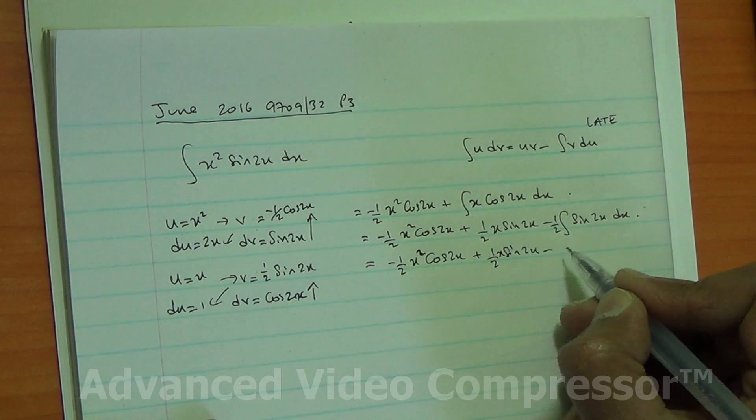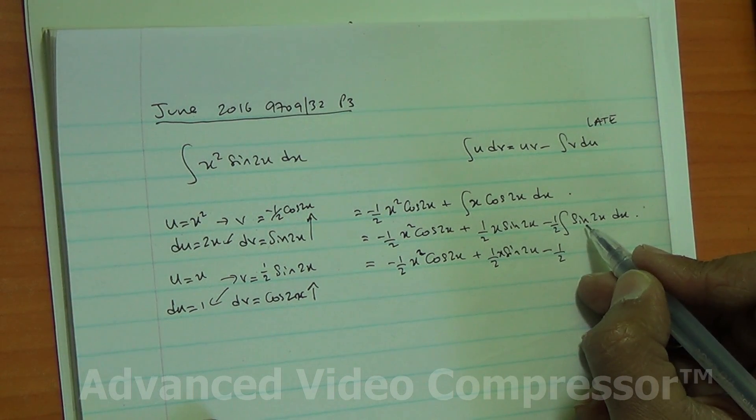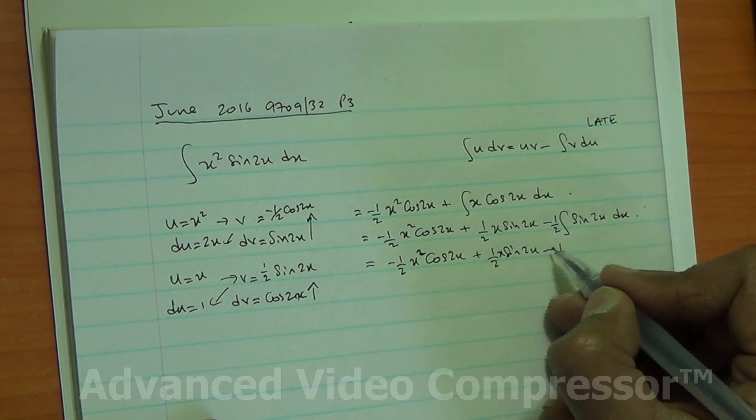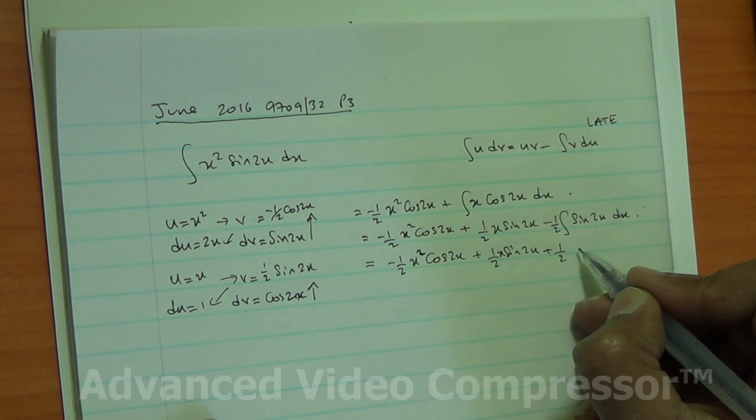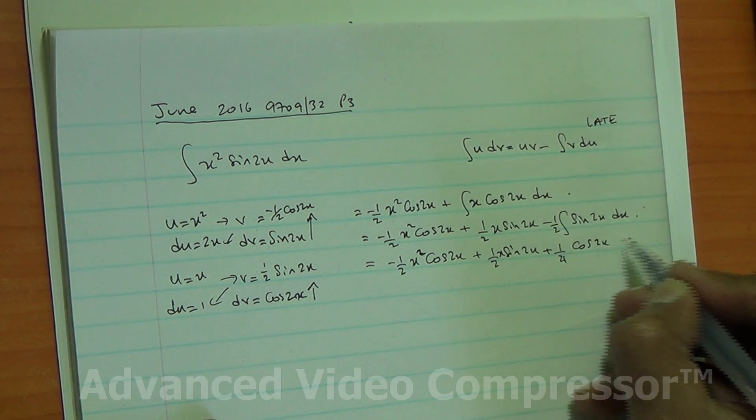So that's basically, it's going to be negative half x squared cos of 2x, and plus half x sin of 2x, minus half. If you integrate the sin, you're going to end up with negative cos of 2x, so negative negative becomes positive, and then divide by 2, that becomes 1 quarter cos of 2x.